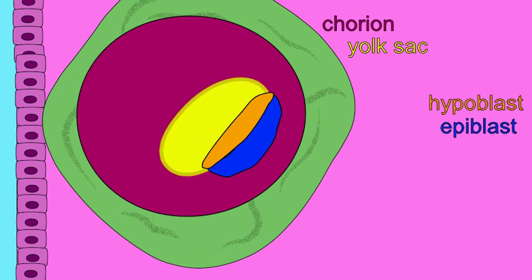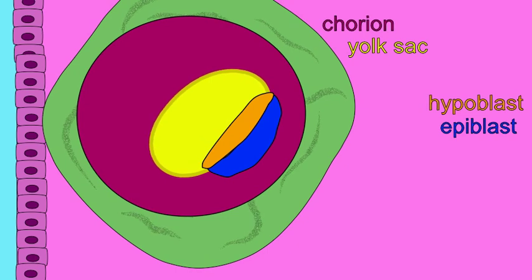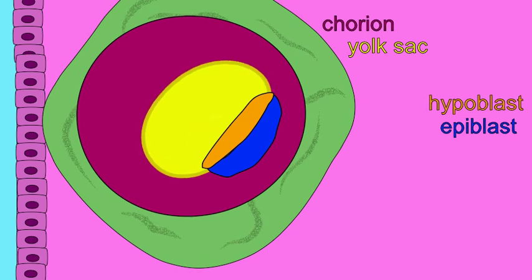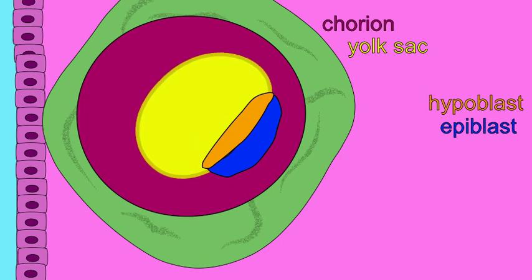In vertebrates which develop in eggs, the yolk is extremely important since it is the source of nutrition which will sustain the embryo. In live-bearing mammals and humans, the yolk sac does not perform this function.